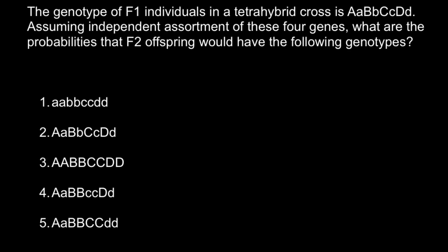Hello. Today's problem: the genotype of F1 individuals in a tetrahybrid cross is heterozygous for 4 genes. Assuming independent assortment of these 4 genes, what are the probabilities that F2 offspring would have the following genotypes?